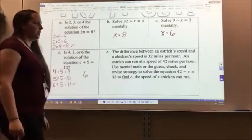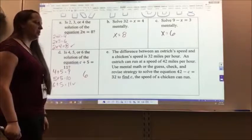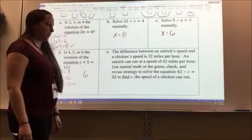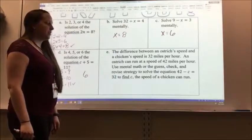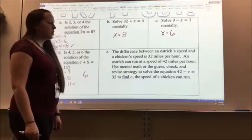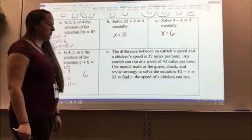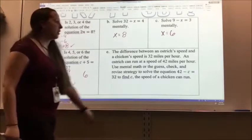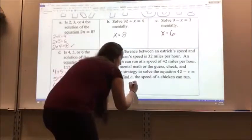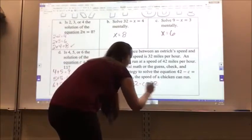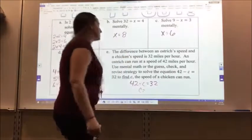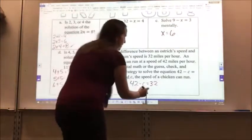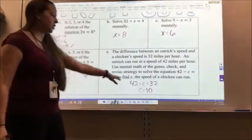For letter E, the difference between an ostrich speed and a chicken speed is 32 miles per hour. An ostrich can run at a speed of 42 miles per hour. Use mental math or the guess, check and revise strategy to solve the equation 42 minus C equals 32 to find C, the speed of the chicken can run. So 42 minus C equals 32. And I have to figure out what C equals, what my chicken speed is. So 42 minus what gives me 32? Well, 42 minus 10 gives me 32. So my chicken speed is 10.